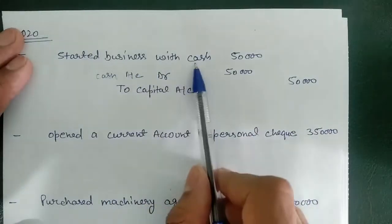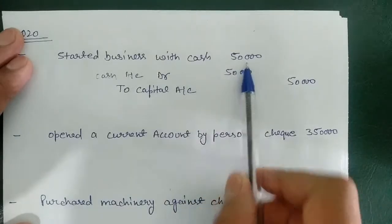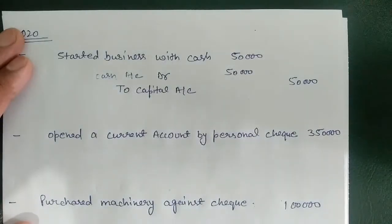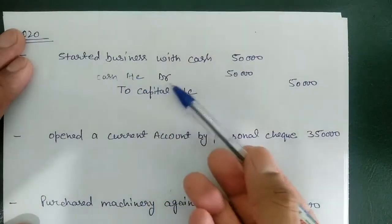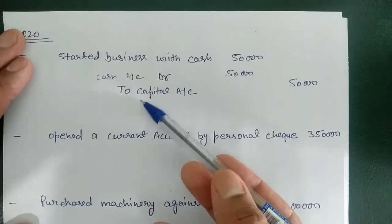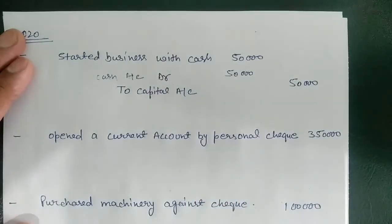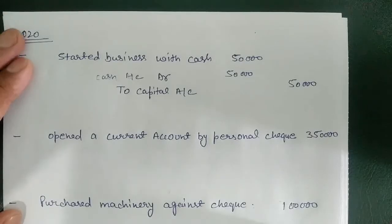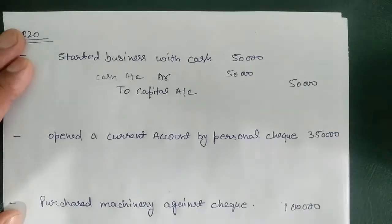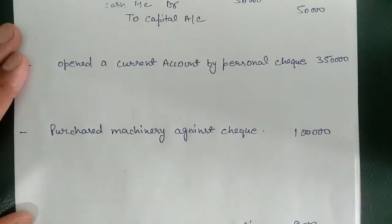The first entry for starting a business will be: starting business with cash 50,000 — the owner brought cash 50,000 into the business. The business will receive cash, so we will debit cash account by 50,000 and credit the capital account by 50,000. We do not mention the name of the owner at the commencement of business, so we use capital account.